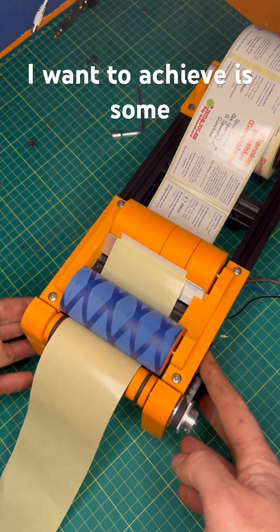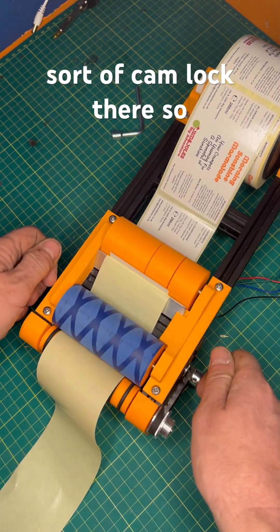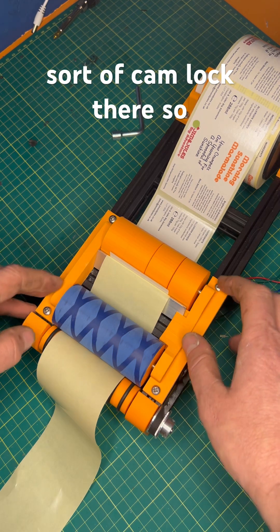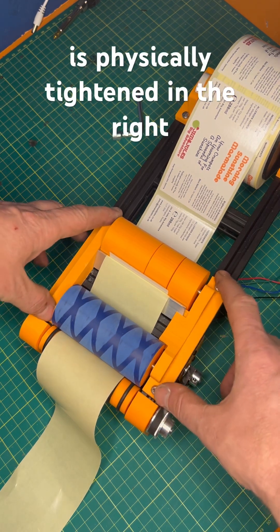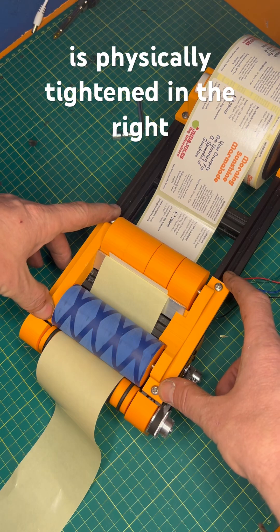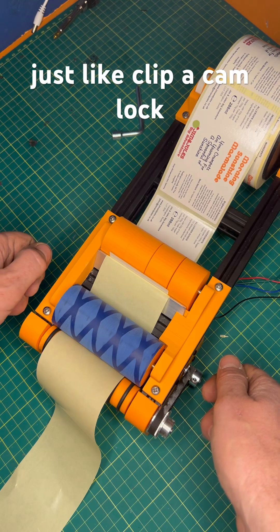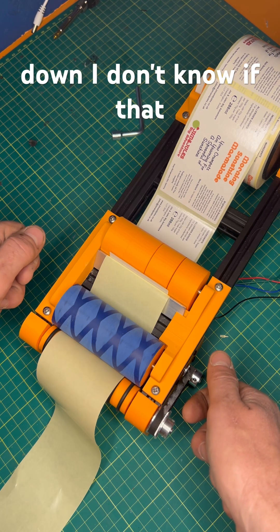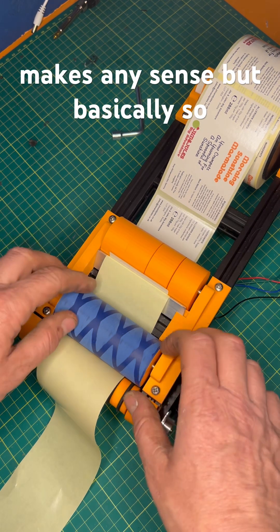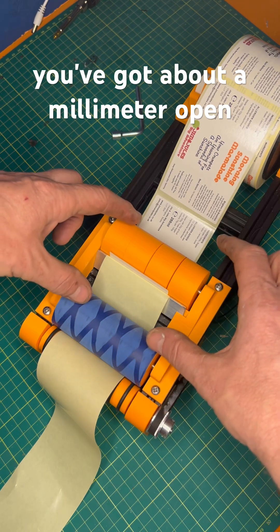Now what I want to achieve is some sort of cam lock there, so it is physically tightened in the right place and all square, so you pull the label through and just clip a cam lock down. I don't know if that makes any sense, but basically you've got about a millimeter open and a millimeter closed.